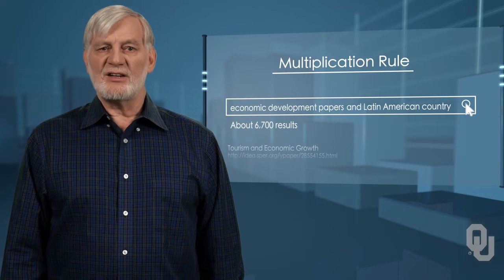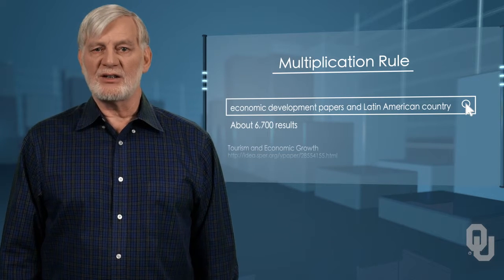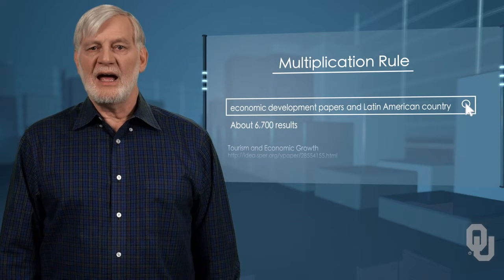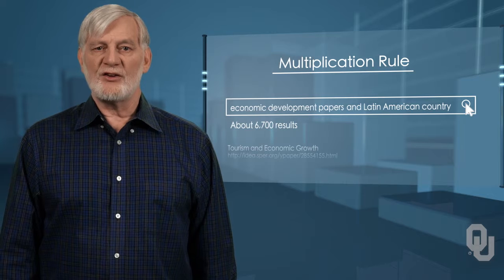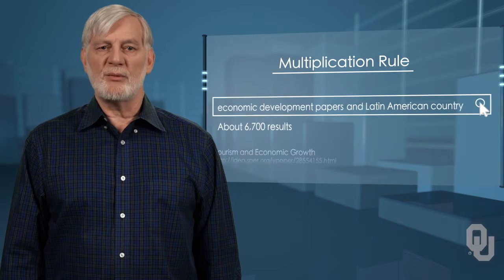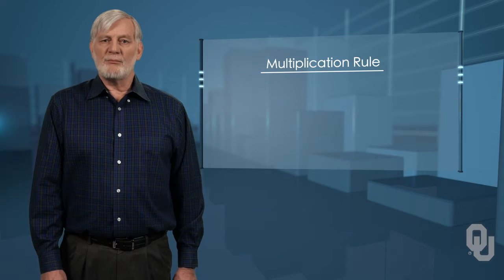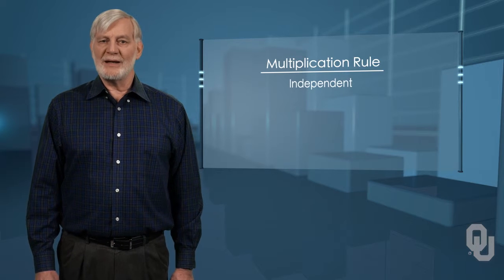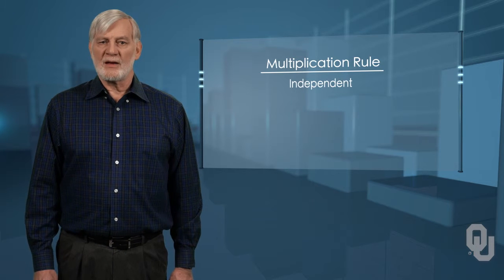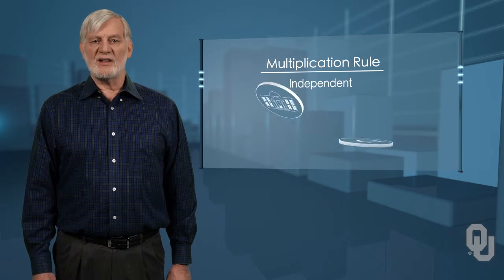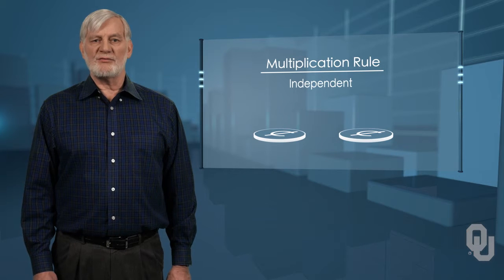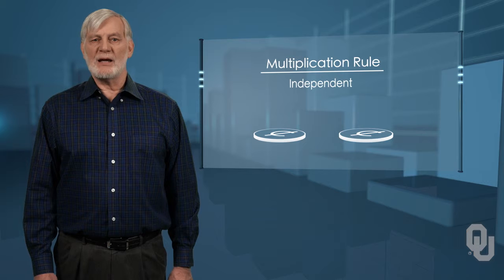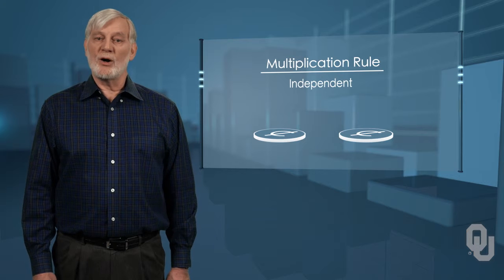The word AND has placed a second condition on the search, just as sophomore with four-point GPA has set two conditions and thus reduces the probability. An important part of the multiplication rule is the case where the events are independent. There are many situations where this is the case. An example is flipping coins — the outcome of each flip is independent of what came before and what will follow.